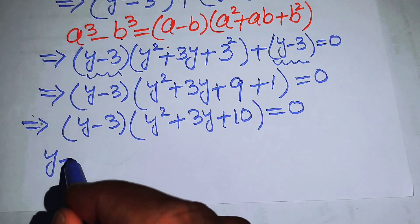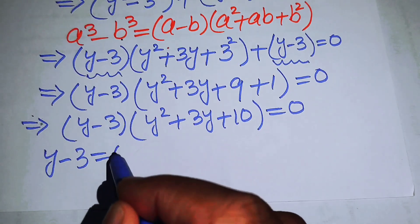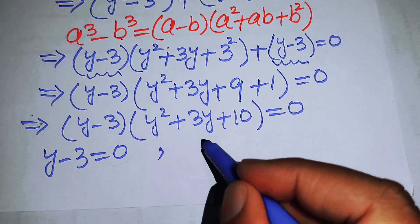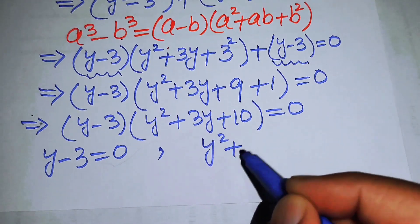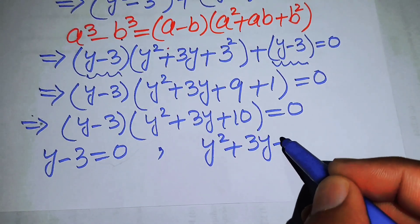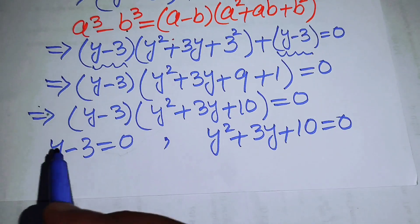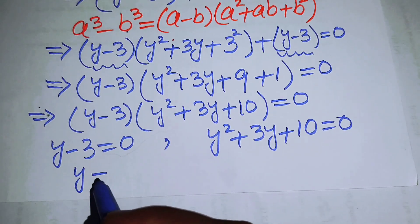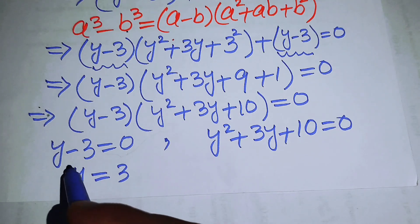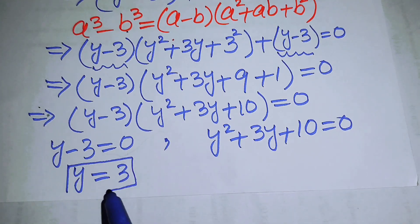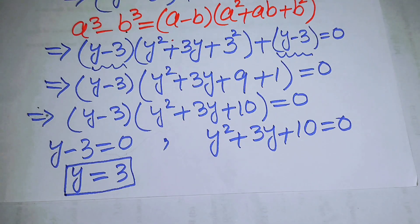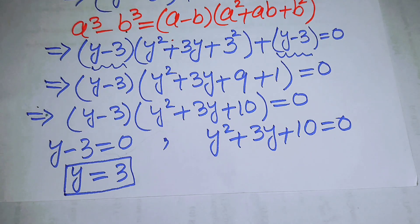We now have two cases. The first case is y minus 3 equals 0, giving y equals 3. This is our first real root. To find the other roots we solve the quadratic equation y squared plus 3y plus 10 equals 0.